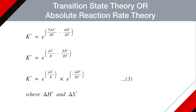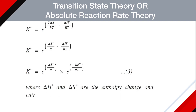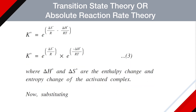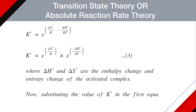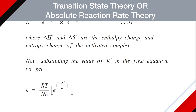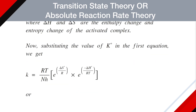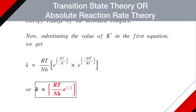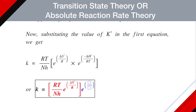In this equation, delta H* and delta S* are the enthalpy change and entropy change of the activated complex. Substituting the value of K* from Equation 3 into Equation 1, we get: K = (RT / NH) × e^(delta S* / R) × e^(−delta H* / RT). This is Equation 4.